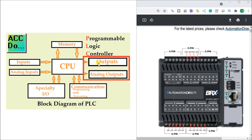Hi everyone, we will be continuing our PLC learning series looking at outputs. PLC outputs are the next component of our PLC block diagram. The outputs of the PLC will be controlled by the PLC program. Controlling outputs is one way to get the inputs to change. We will be looking at digital and analog outputs that can be wired to the programmable logic controller.